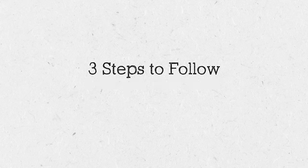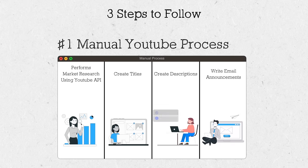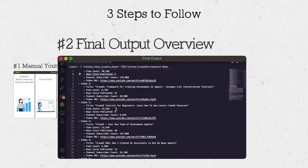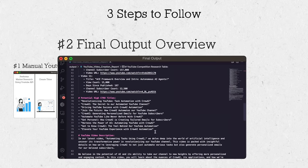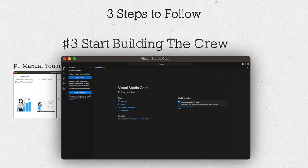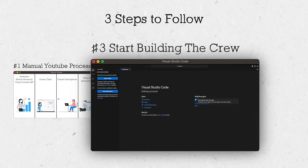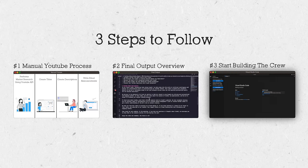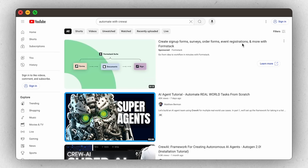Now it's time to dive into automating my current YouTube process. To help this all make sense, here are three steps we're going to follow: first, I'll quickly cover my current manual YouTube process; second, I'll show you the final output I want my AI crew to generate; and third, we'll hop over to Visual Studio Code and actually start building the crew to automate the entire process.